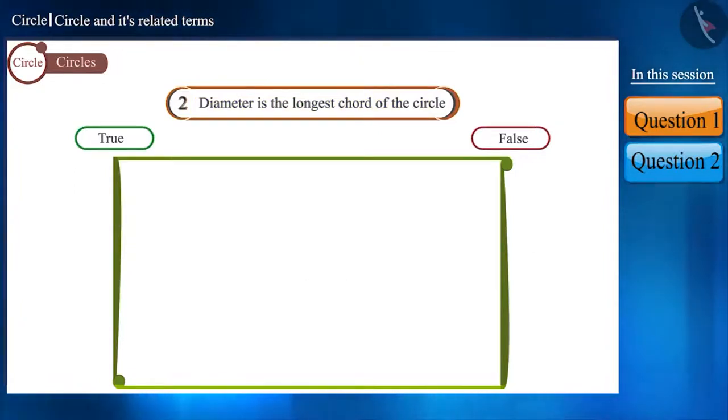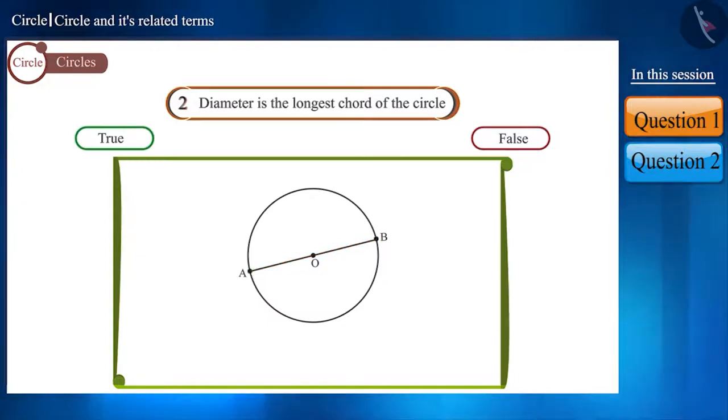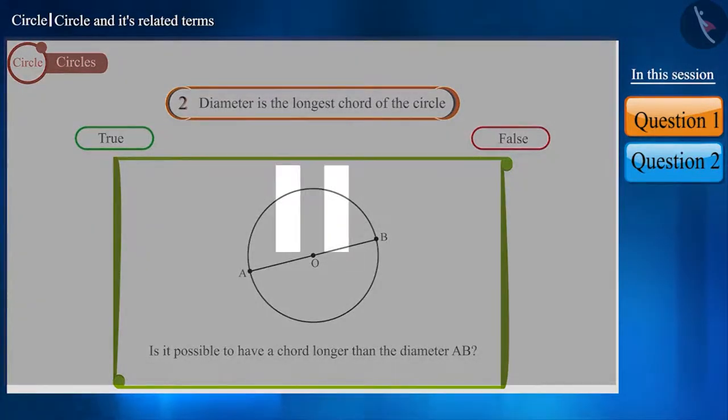Friends, we know that the line segment formed by joining any two different points on a circle is called a chord. Therefore, diameter AB is also the chord of this circle. Can you draw a chord in this circle whose length is more than the diameter AB? You can try by pausing the video.